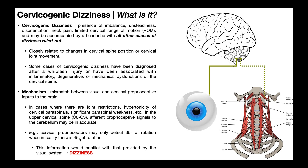Assuming your eyes are open and good, they would be able to detect that your neck is rotated 45 degrees. However, those cervical proprioceptors are only detecting 35 degrees of right rotation. Now you have a mismatch — conflicting information going to the brain between the proprioceptive system and the visual system — and that causes dizziness.